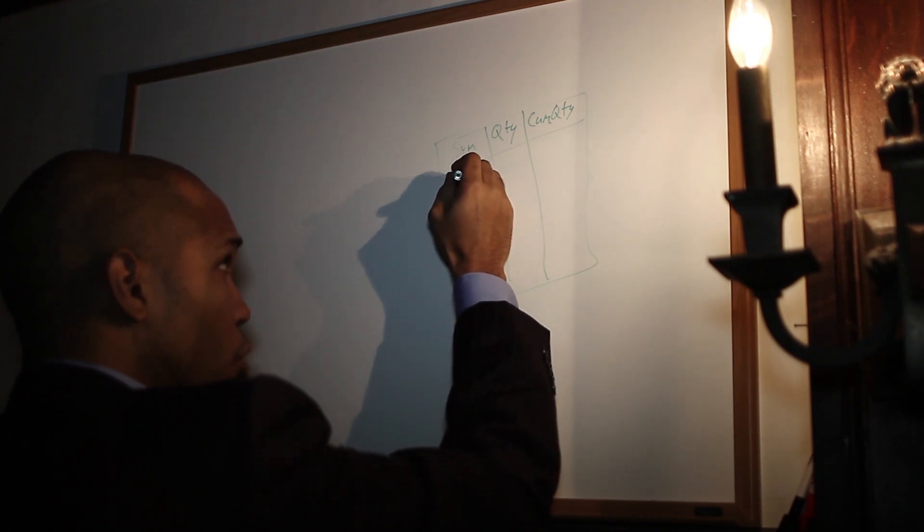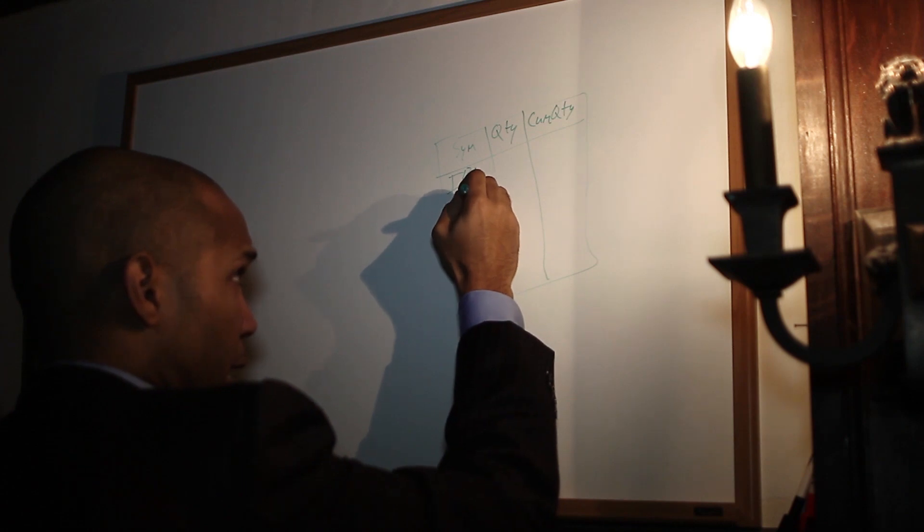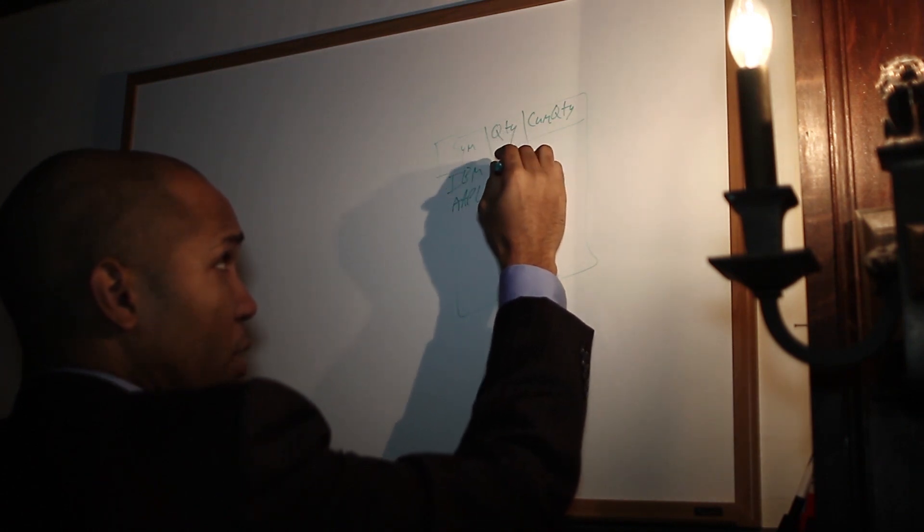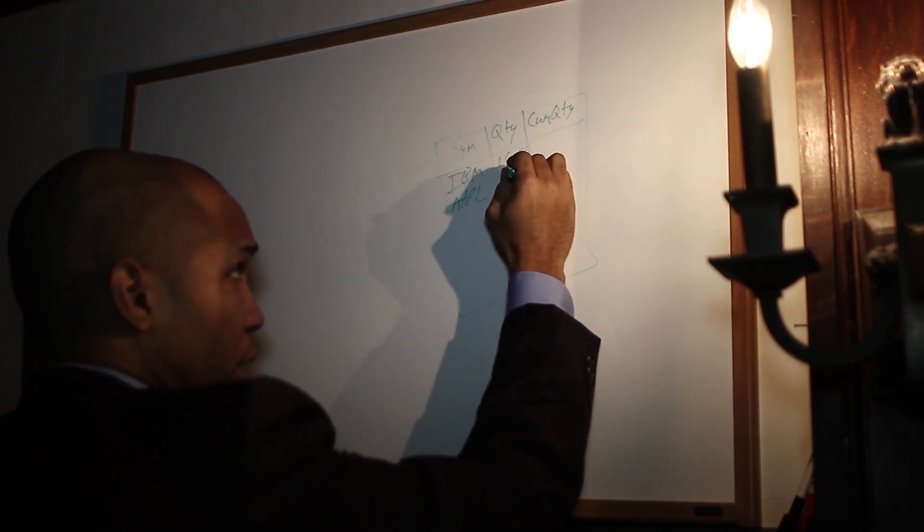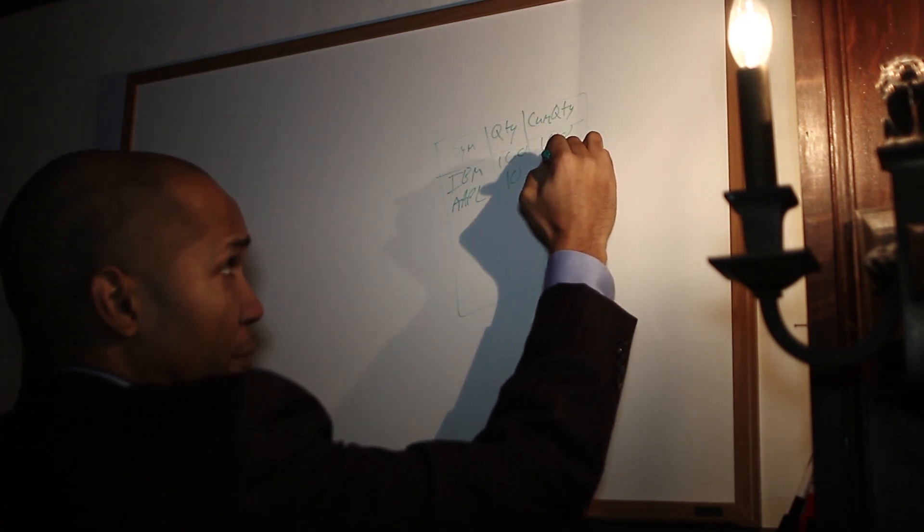We can have this in a spreadsheet, and then we can have each row. So order one is on IBM. Order two is on AAPL, our favorite stock. 100 shares, 10 shares. This has been executed completely. This has been executed halfway.